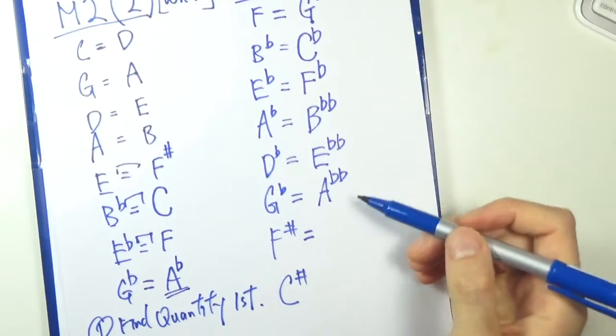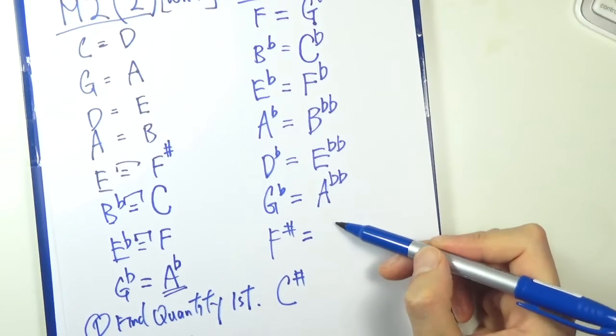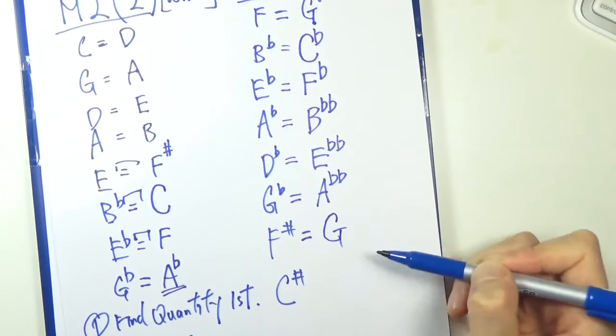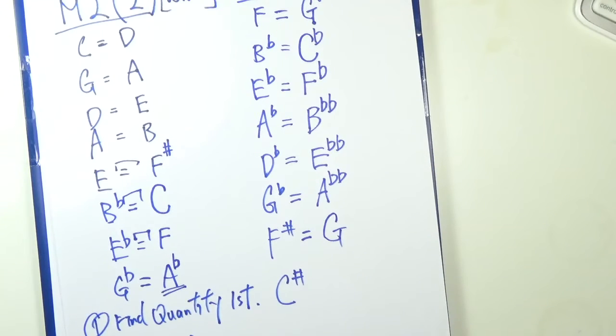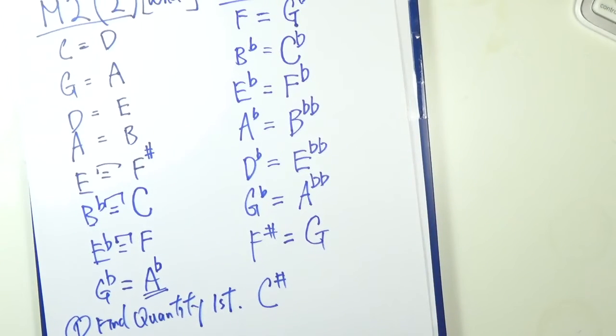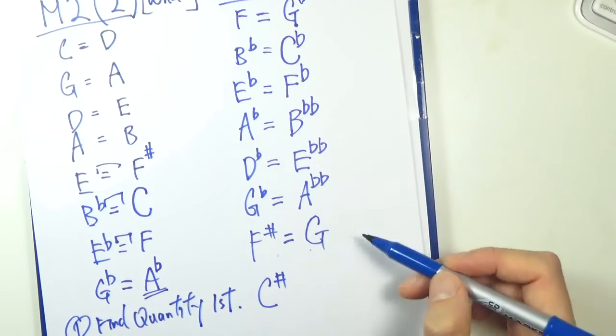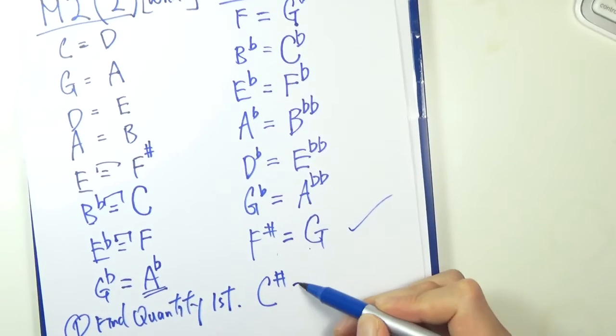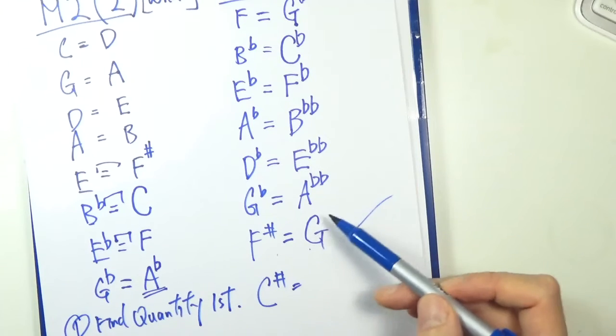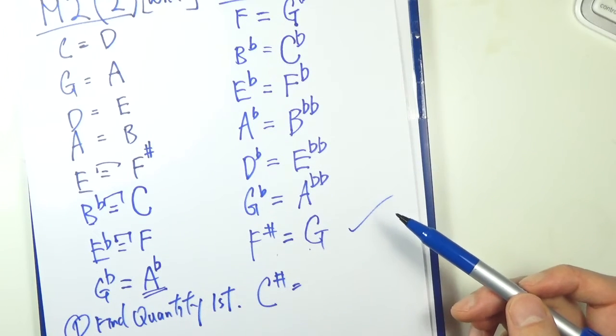We got a sharp note. So F sharp, so regardless, put down a G here. You are half right already. So G, F sharp. That's already a half step apart. So actually we are good. So there is no need to alter this note, because we are already a half step apart.